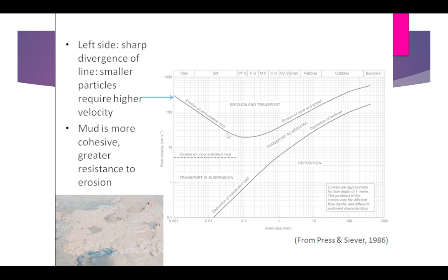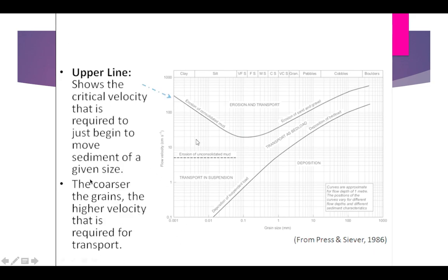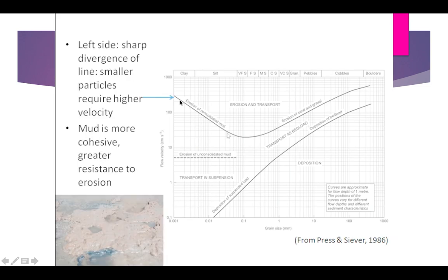This is the reason why we have this kind of curve. It's not parallel to the downward curve as you might expect from 'coarser grain, higher velocity.' Instead, we have a U-shaped curve because of the electrostatic charge present on clay.